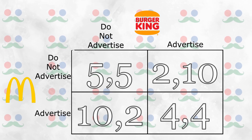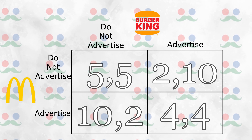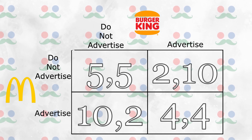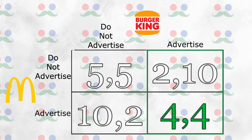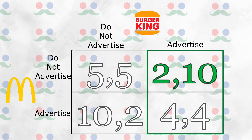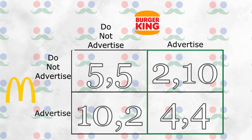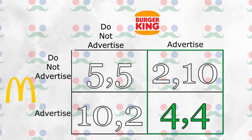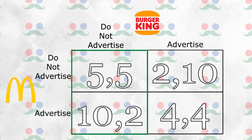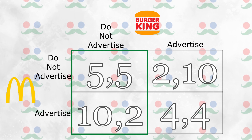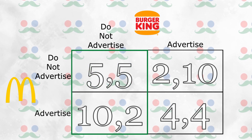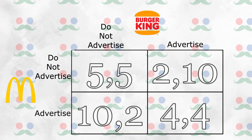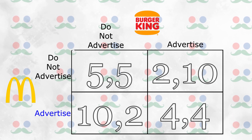Once we have a payoff matrix, we can find the best options for each restaurant by fixing the other restaurant to each option. From McDonald's perspective: if Burger King advertises, McDonald's can also advertise for a profit of $4, or not advertise and collect only $2. McDonald's would advertise, since $4 is greater than $2. If Burger King does not advertise, McDonald's can advertise for $10 or not advertise for $5 — again, McDonald's will advertise. So no matter what Burger King does, McDonald's will advertise. This is called a dominant strategy.